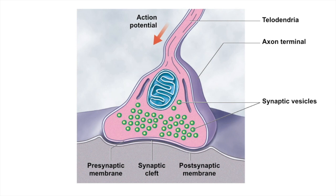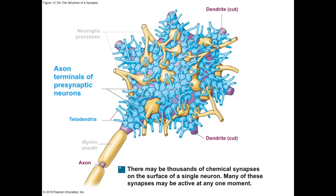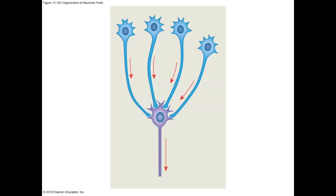A critical point, if you really want to understand neural communication, is that the post-synaptic neuron can be made less likely to pass on the signal, because quite often the pre-synaptic neuron is inhibitory. This really only makes sense when you consider that any given post-synaptic neuron can have thousands of pre-synaptic inputs all trying to influence it. The decision to pass on that signal ultimately will be decided at the axon hillock, where the excitatory and inhibitory signals are summed up.